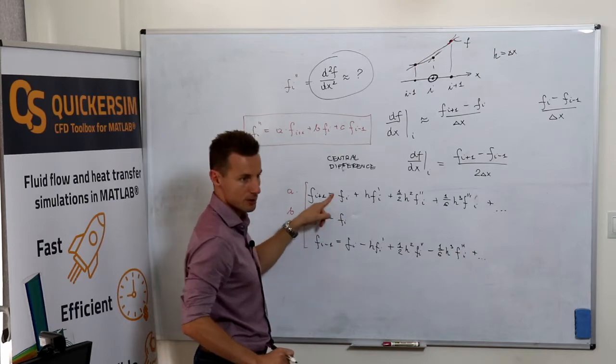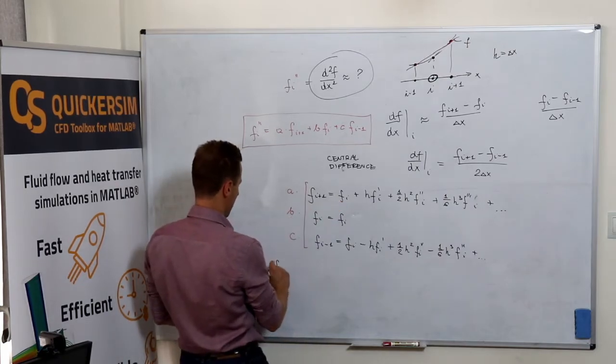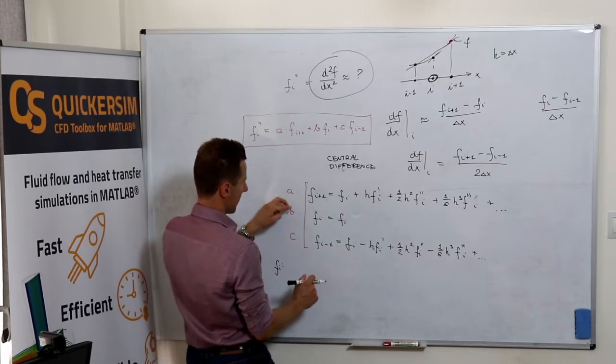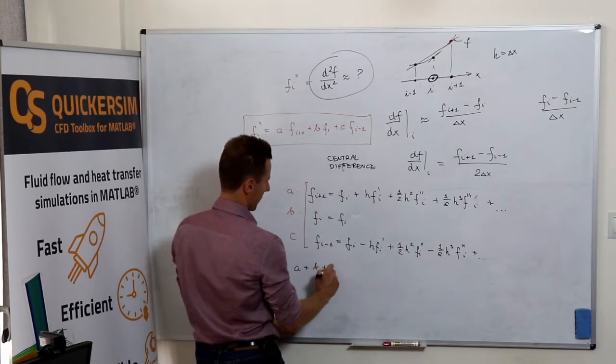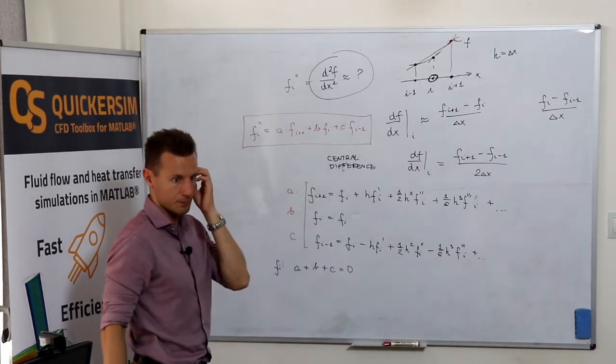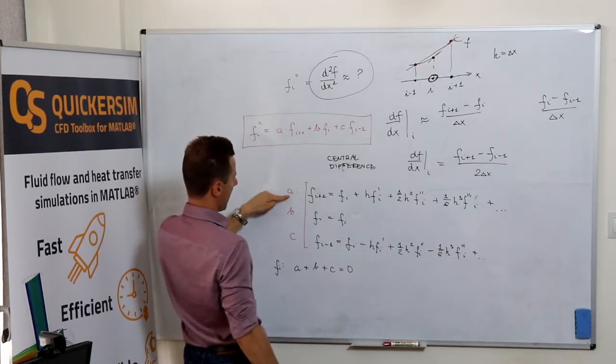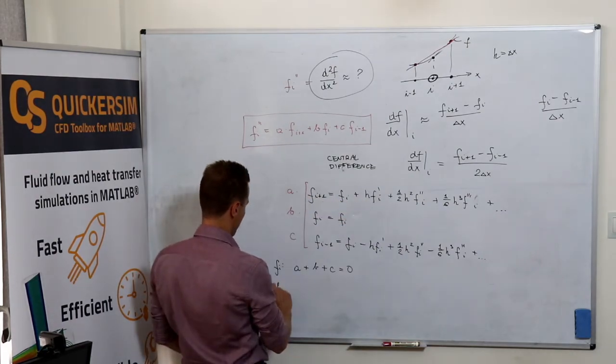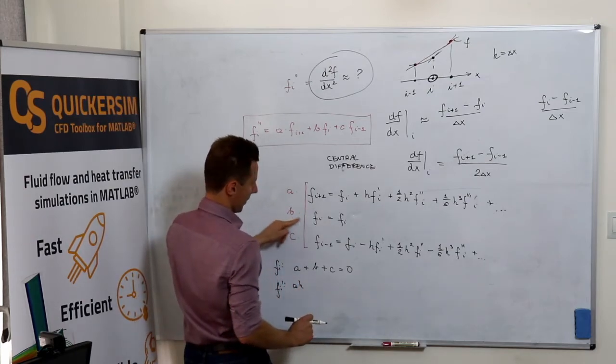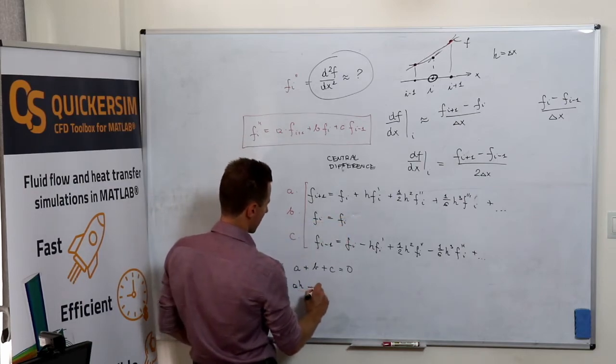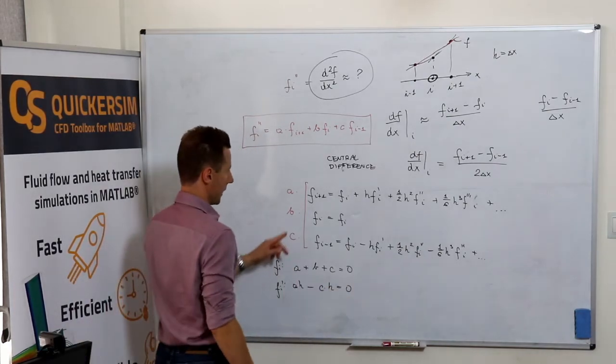For f_i, how much of f_i would we get? a plus b plus c must equal zero because we don't want to have it completely. For f_i prime, we've got a times h, nothing from here, minus c times h, equals zero.